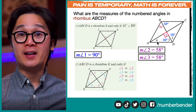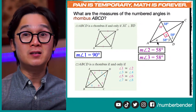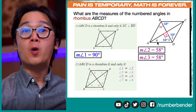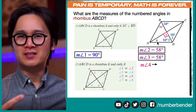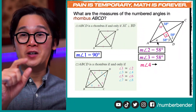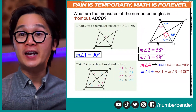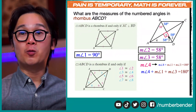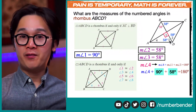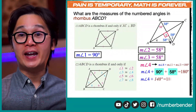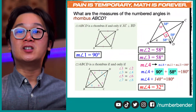Now all we need to find is the measurement of angle 4. We're not going to use the theorems about rhombuses here. We're going to use the theorem about the interior angles of a triangle — the sum of the interior angles of a triangle equals 180 degrees. Using angles 1, 3, and 4, we can find the measurement of angle 4. We add the measurement of angle 4, angle 1, and angle 3, and they equal 180 degrees. Angle 1 is 90 degrees and angle 3 is 58 degrees, so 90 plus 58 equals 148. Subtracting 148 from both sides, the measurement of angle 4 is 32 degrees.